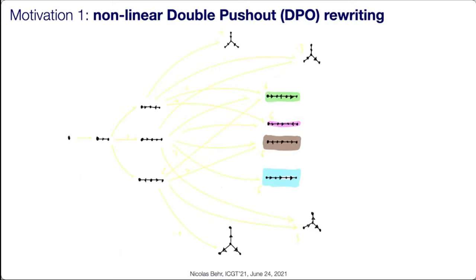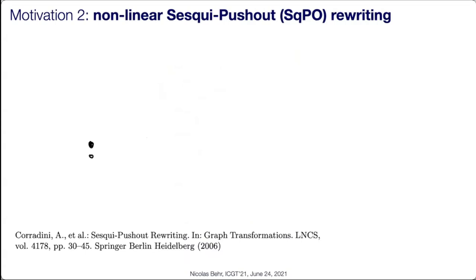The desire is to attack this with a compositional rewriting theory. We want a concurrency theorem to statically reason about, for example, sequences of rewriting steps.